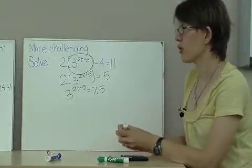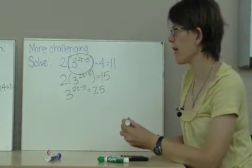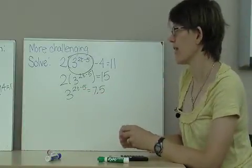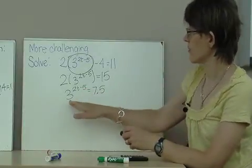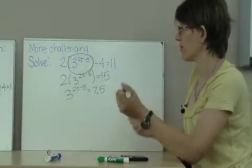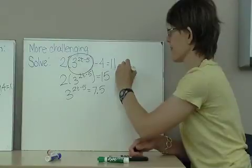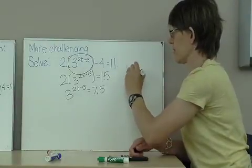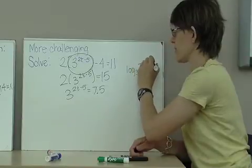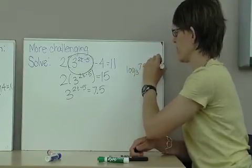So now I have 3 to the power 2t minus 5 equals 7.5. My logarithm base here is going to be 3. Remember that this is like saying, log to the base 3 of 7.5 equals 2t minus 5.